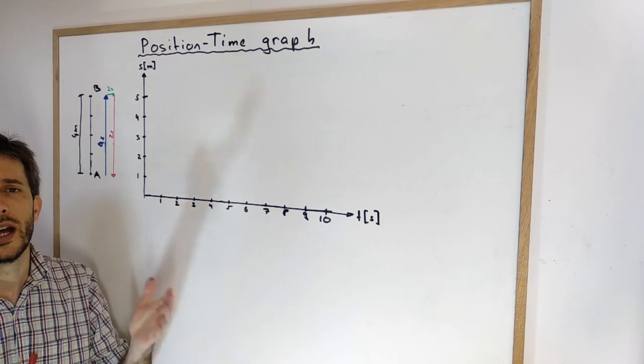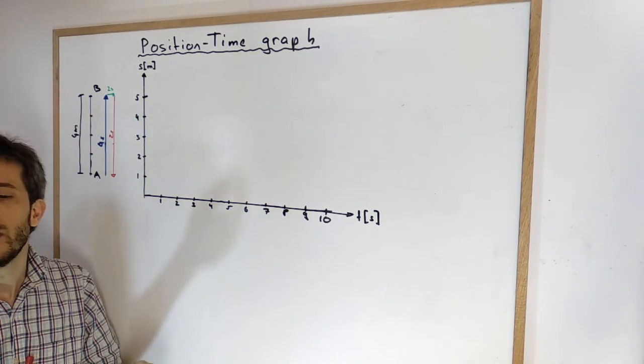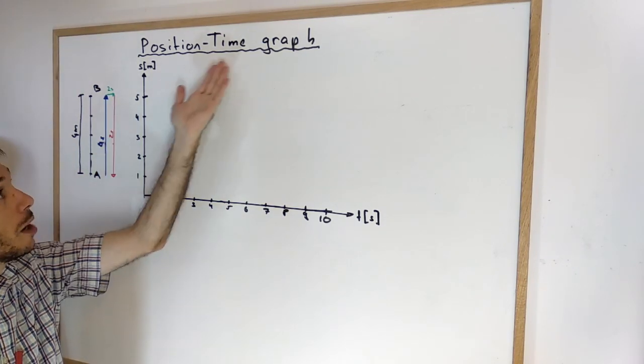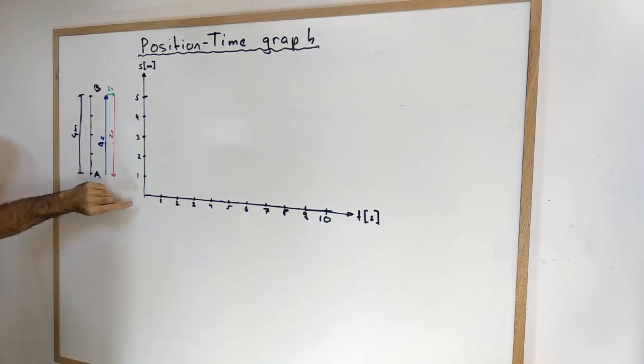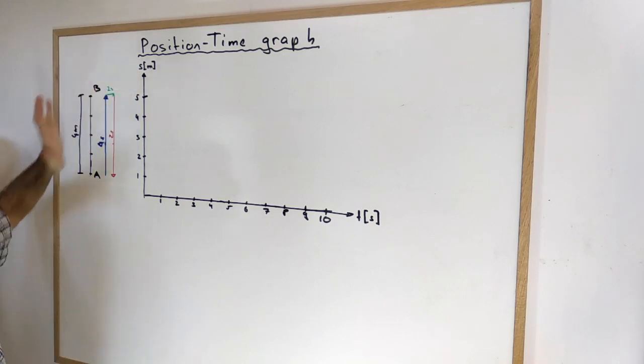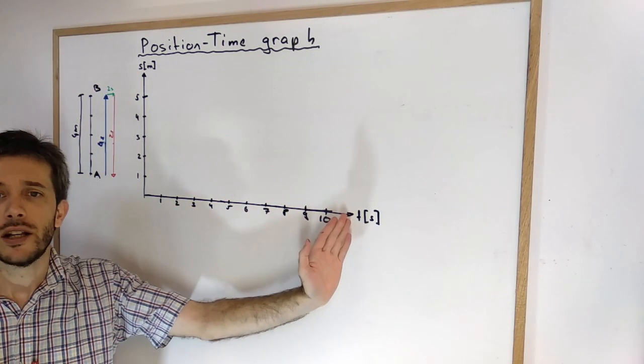A very useful tool when analyzing kinematics problems is the position-time graph. What does the position-time graph do? We plot on the y-axis the position and on the x-axis the time.